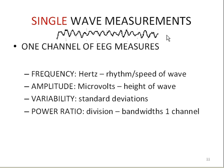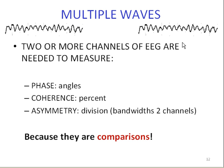Single wave measurements are made with one channel of EEG, and they can measure the EEG via frequency, amplitude, variability, or power ratio. Multiple wave measurements require more than one channel — there must be two channels of EEG activity. Because multiple wave measurements allow for comparisons, three of those comparisons are phase, coherence, and asymmetry.